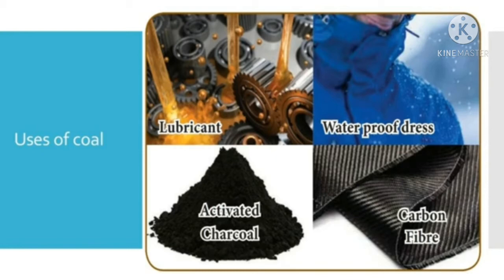Some of the uses of coal are as follows. Coal is used to generate heat and electricity. Coal is used to make derivatives of silicon which are used to make lubricants, water repellents, resins, cosmetics, hair shampoos and toothpaste. Activated charcoal is used to make face packs and cosmetics. Coal is used to make paper. Coal helps to create alumina refineries. Carbon fiber, which is an extremely strong but lightweight material, is used in construction, mountain bikes and tennis rackets. Activated carbon used in filters for water and air purification and in kidney dialysis machines is obtained from coal.